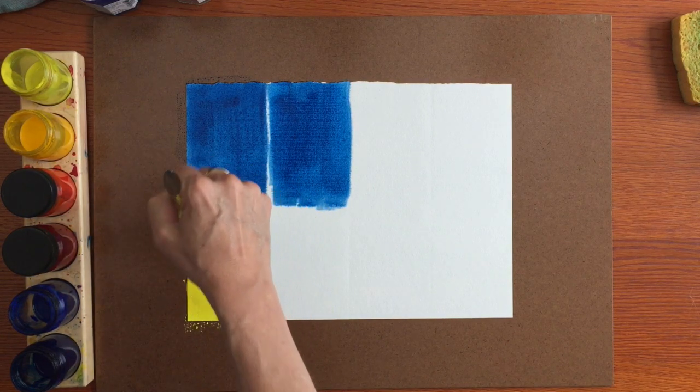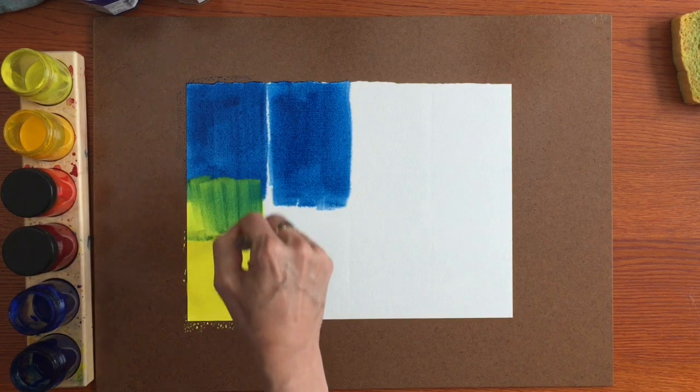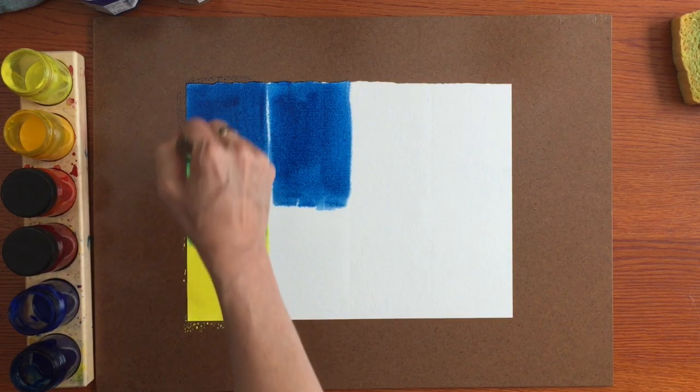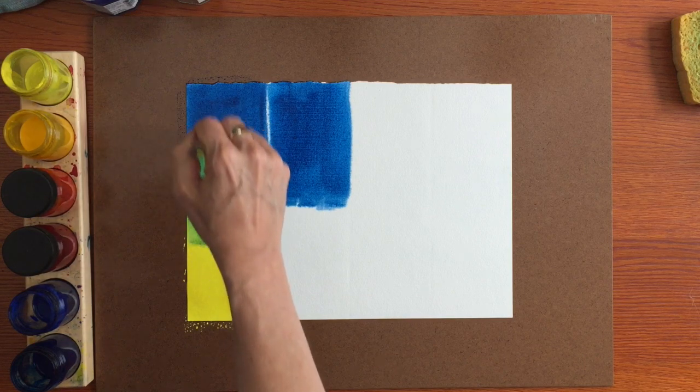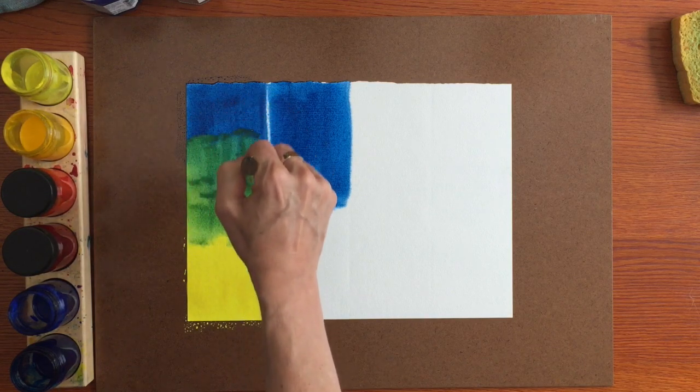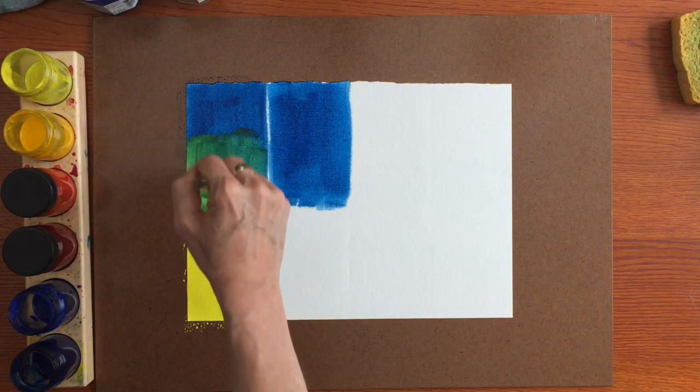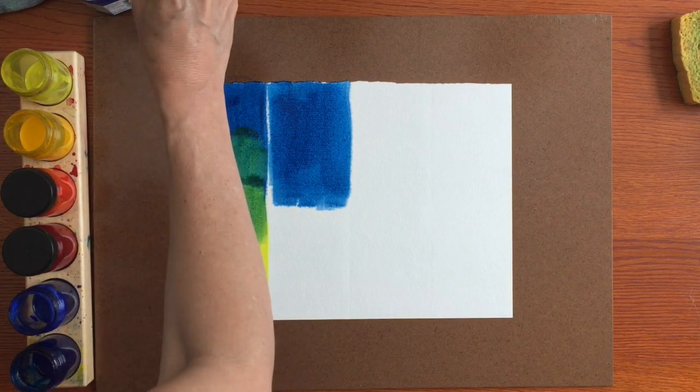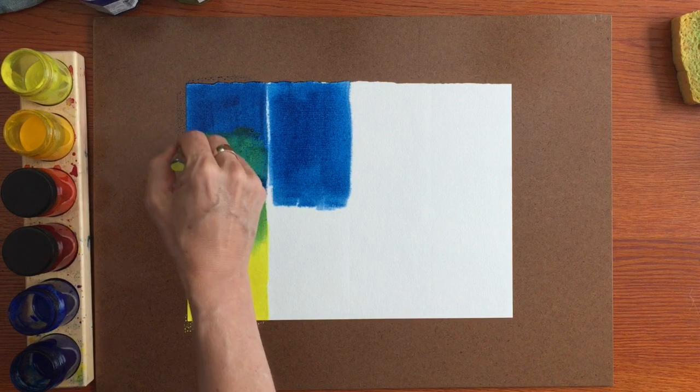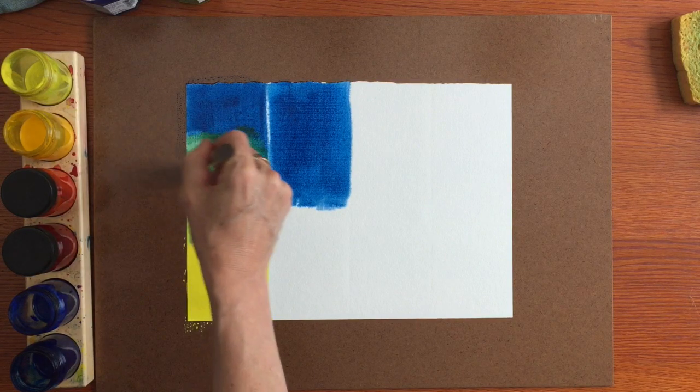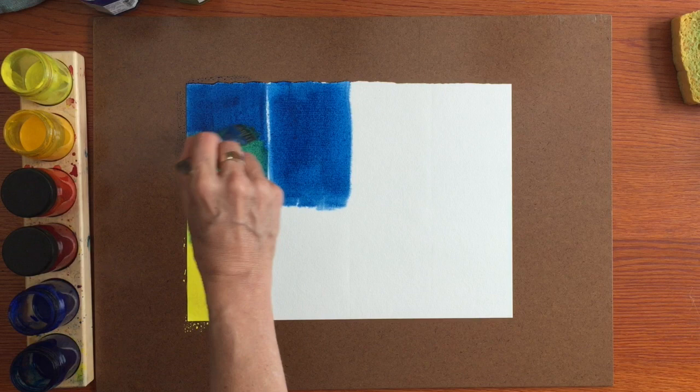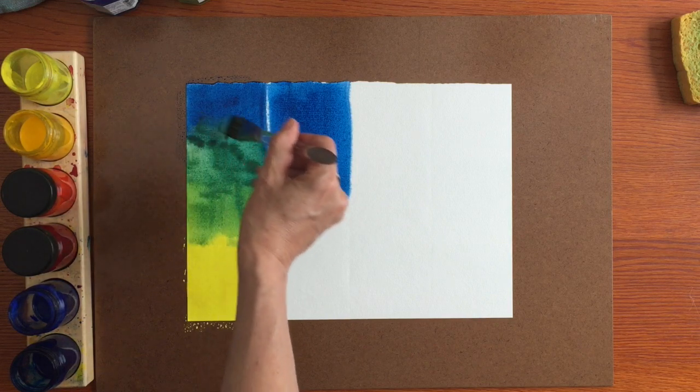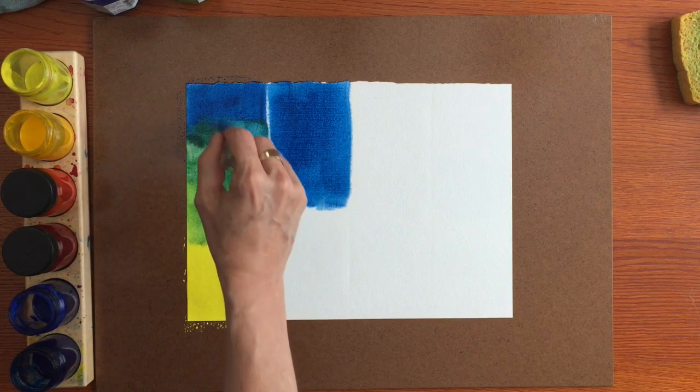And when they come to meet, then the greens appear. And here I find that this mixture, the lemon yellow and Prussian blue, tend to have the most vibrant greens which are really spectacular, especially when you're doing plants and trees and outdoor scenes and things. You have enough variety of blue green, green, and yellow green that you can create just with these two colors and the blends.